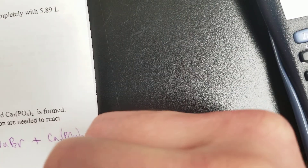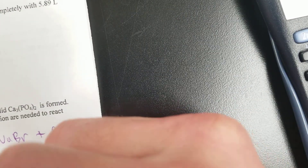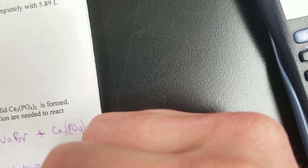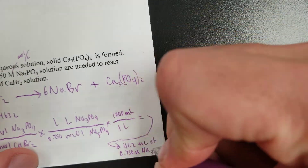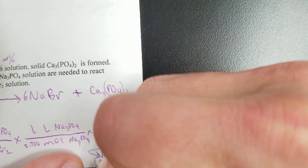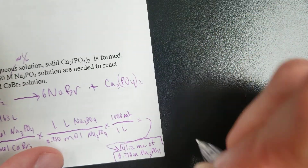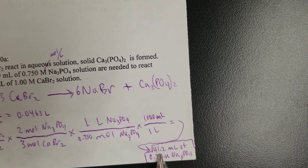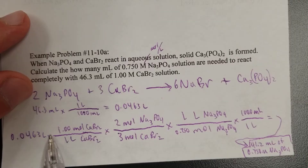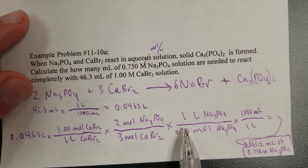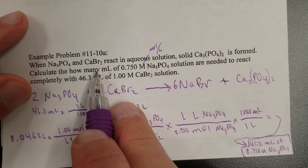41.2 milliliters of 0.750 molar Na₃PO₄ — that's the final answer. Notice how units cancel all the way through: liters cancel liters, moles cancel moles for one chemical, moles of a different chemical cancel moles of a different chemical, liters cancel liters, giving milliliters in the answer. We give milliliters only because the problem asks for milliliters.